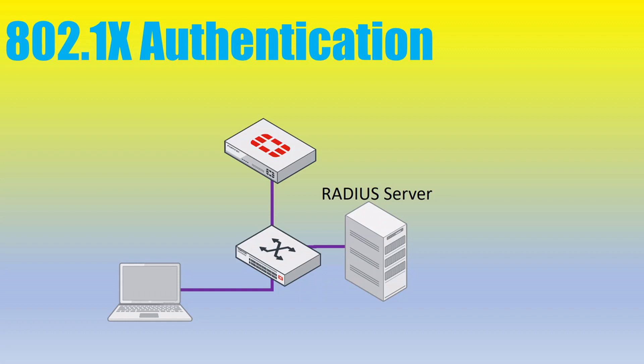In this video, we will go over 802.1x authentication using a FortiGate switch. My choice of RADIUS server here is going to be a Windows server with NPS installed.